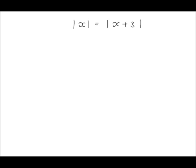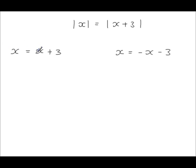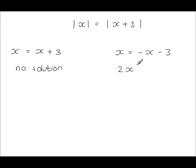For the modulus of x equals the modulus of x plus 3: write the equation without the modulus, and then do the same but changing the signs on one side. From the first equation, subtracting x from each side gives 0 equals 3, which is meaningless, so this gives no solution. From the second equation, taking x to the other side gives 2x equals minus 3, so x equals minus 3 over 2. There is only one solution.